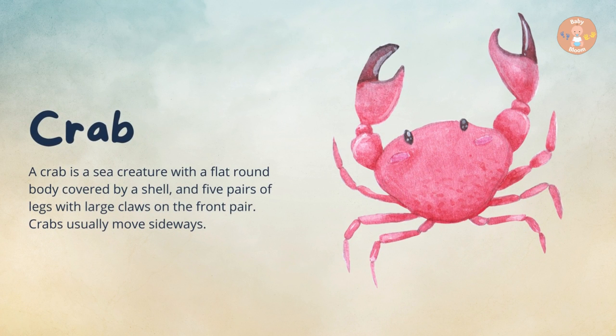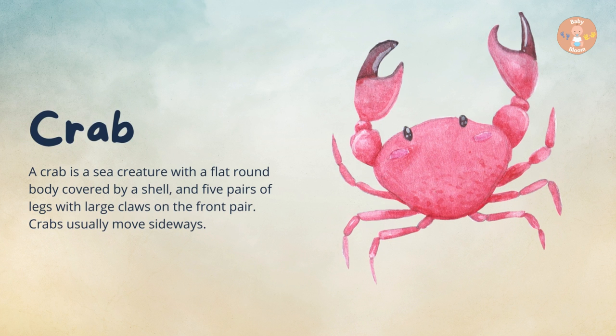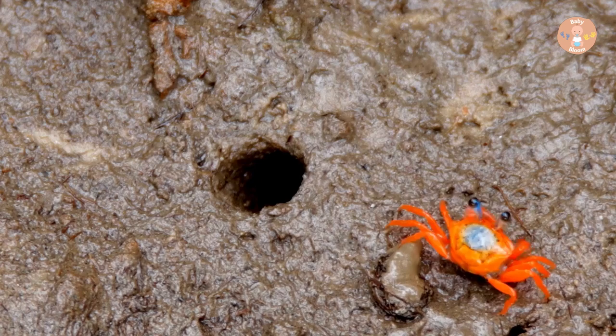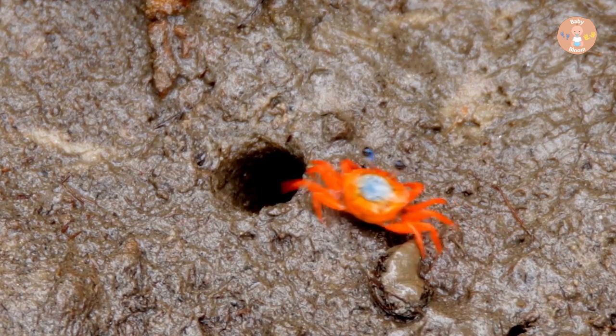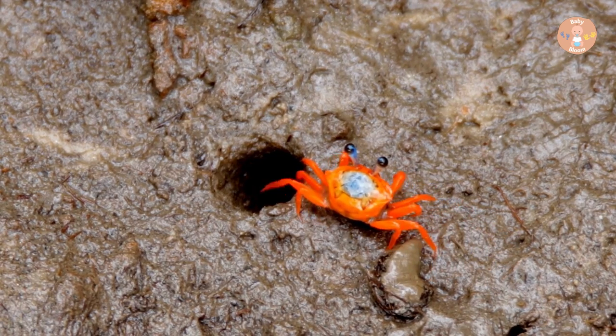Crab. A crab is a sea creature with a flat round body covered by a shell, and five pairs of legs, with large claws on the front pair. Crabs usually move sideways.